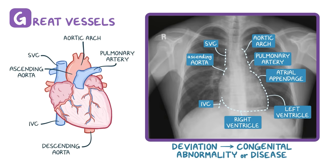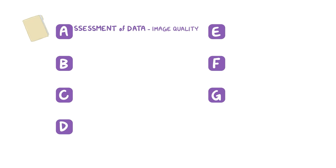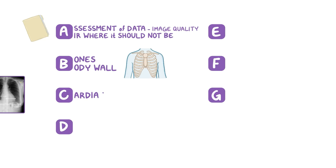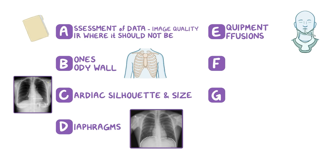Okay, to recap using ABCDEFG: A is for the assessment of data and quality as well as looking for air where it should not be. B is for bones and the body wall. C is for cardiac silhouette and size. D is for diaphragms. E is for equipment and effusions. F is for lung fields. G is for great vessels.